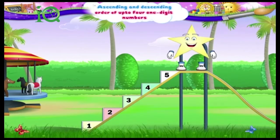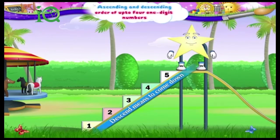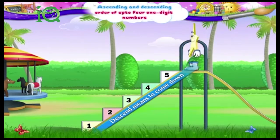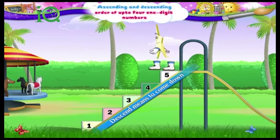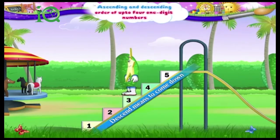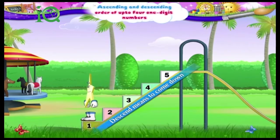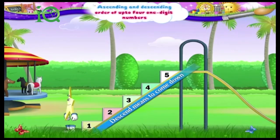Now, Starry, if you do get scared and you don't want to use the slide, you can come down the steps again. You can descend. But be careful — you need to come down or descend one step at a time. Like this: 5, 4, 3, 2, 1. And you are on the ground again.